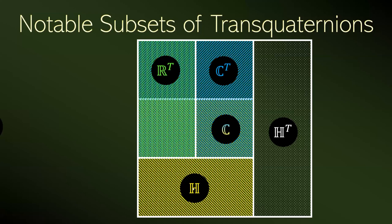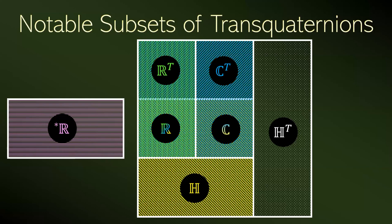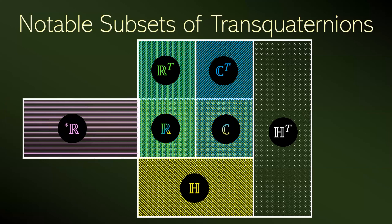Of course, transquaternions are not a superset of every number system. For example, just for comparison, we have the set of hyperreal numbers that have the infinitesimal numbers. The hyperreal numbers are not a subset of the transquaternions. The only common part between them is the real numbers.